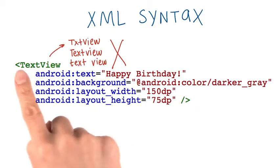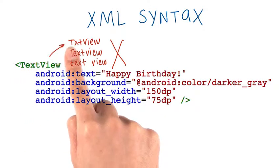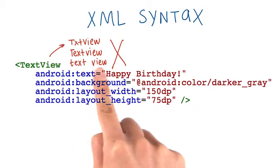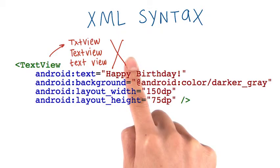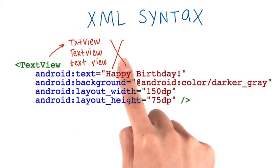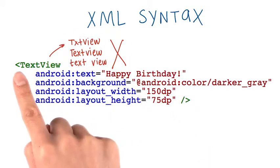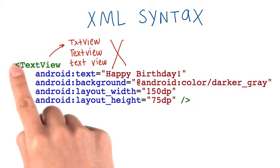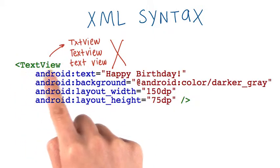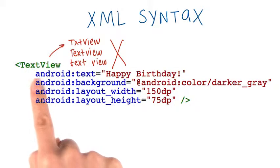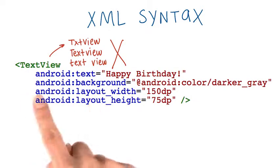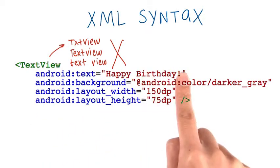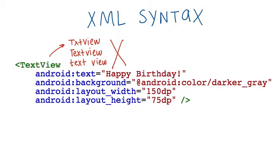Here's an example. For the name of the view, we can't spell it "txt view," or "text view" with a lowercase V, or "text view" with a space in it. These are all incorrect and the computer won't know we mean TextView. If we want TextView, we need to spell it exactly with a capital T and a capital V — that's camel case. Attribute names need to be spelled out exactly with a colon after the "android". We need an equal sign, and then we need to put quotes around the values.